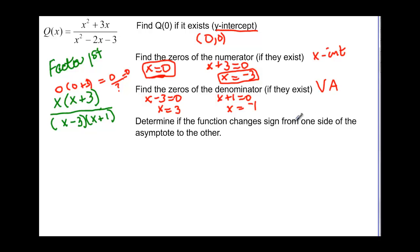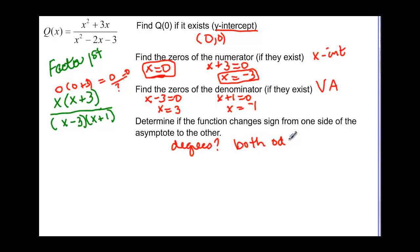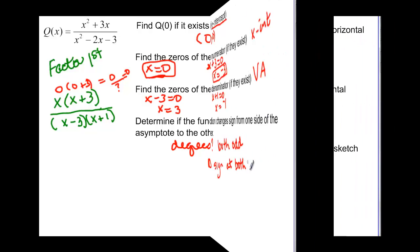We want to determine if the graph changes sides from one asymptote to the other. We have to go back and look at the degrees — and they're both odd. So the graph will change sides at both vertical asymptotes.